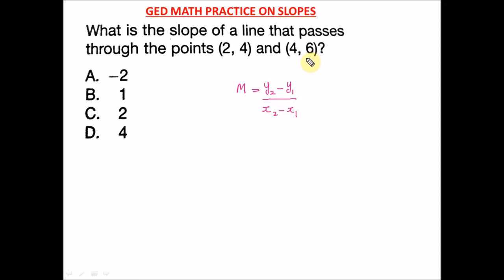The first point being mentioned is the first point, and the second is the second point. I always make sure to come up here and label: this is x1, this is y1, this is x2, and this is y2. This will help you so you don't get confused when inputting your values into the formula.